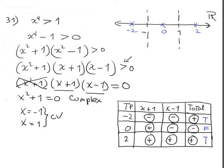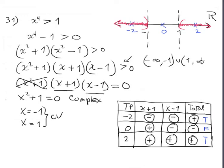Our inequality contains the symbol greater than, meaning we want the expression to be positive. The true parts are those containing -2 and +2 as testing points. Since it's a strict inequality, it does not contain the endpoints. The solution is from negative infinity to negative one, union one to infinity — or equivalently, x < -1 or x > 1.